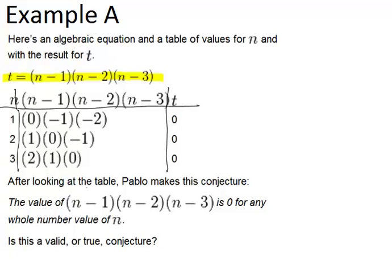And after looking at the table, Pablo makes this conjecture: The value of n minus 1 times n minus 2 times n minus 3, in other words the answer for t,